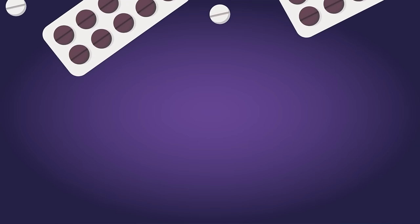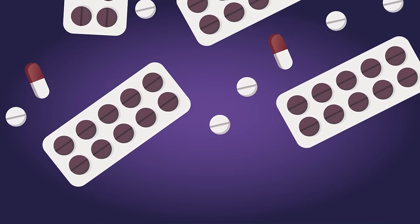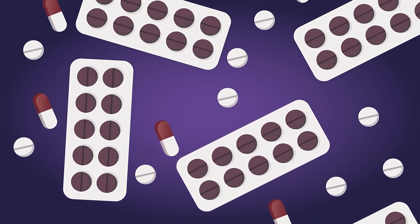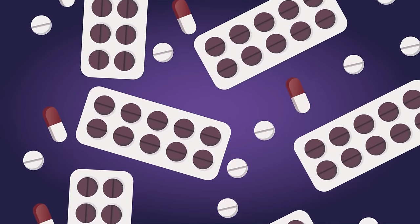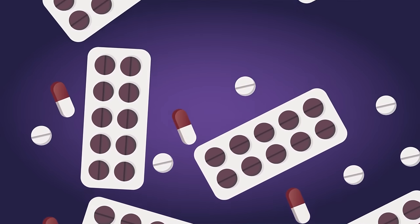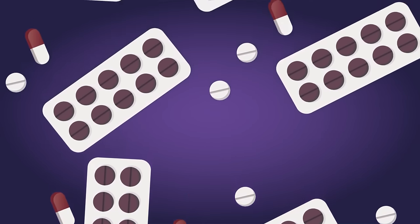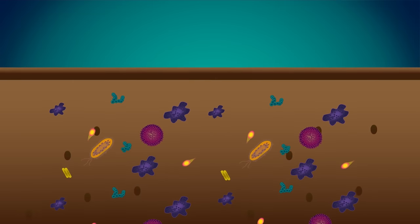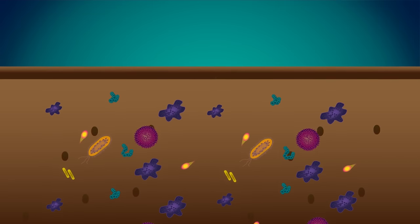Microbes could be the answer to our antibiotic crisis. They could be used to produce new antibiotics that are powerful enough to kill even the worst superbugs. In the past 50 years, all new antibiotics have come from bacteria living in the soil pretty much in your backyard. Or maybe they'll replace antibiotics altogether.